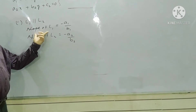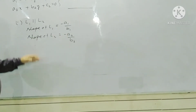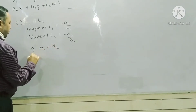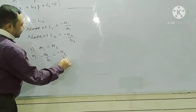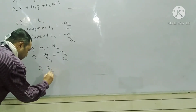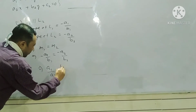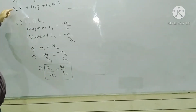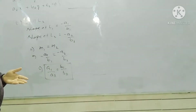So, slope of L1 is minus A1 by B1, and slope of L2 is minus A2 by B2. If two lines are parallel, their slopes must be equal: M1 equals M2, which implies minus A1 by B1 equals minus A2 by B2, or A1 by A2 equals B1 by B2. You should remember this to check whether two straight lines are parallel or not.